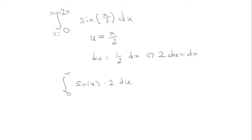Now I'm going to integrate 2 times sine of u. The antiderivative of sine u is negative cosine u. And then I'm going to multiply that by the 2. And I'm going to evaluate from 0 to π.